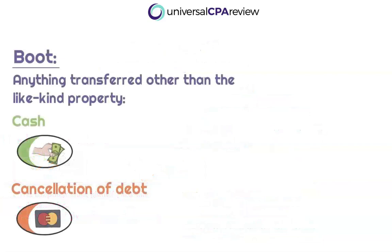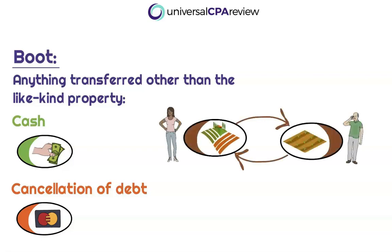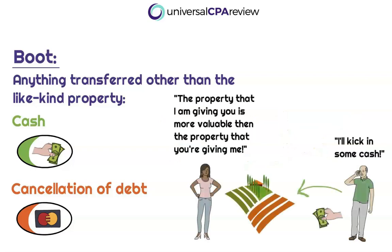The next important term you need to be aware of is boot. We've already discussed what like-kind property is — it's real property exchanged for another piece of real property. But in some transactions, it's not always going to be exclusively real property exchanged for other real property. In some cases, the taxpayer might exchange that piece of property plus something else that adds value — one taxpayer might say the piece of property I'm giving you is more valuable than what you're giving me, so I'm going to need some cash with that property.